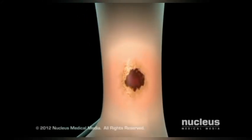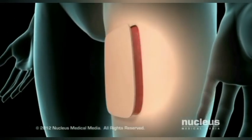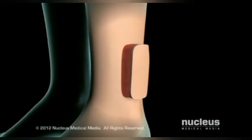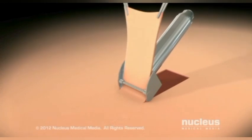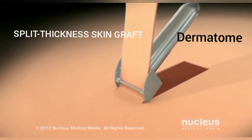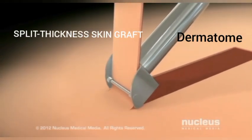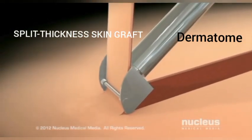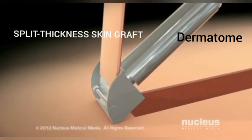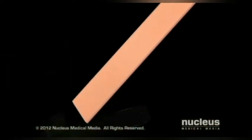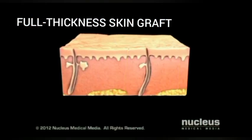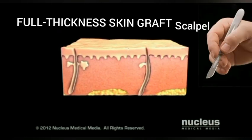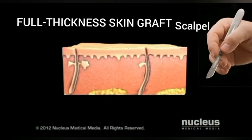Skin grafting is a procedure in which normal skin tissue is transferred to a site of damaged skin. For a split thickness skin graft, which requires epidermis with some part of dermis, a dermatome is used which cuts thin slices of skin. For a full thickness skin graft, which requires epidermis with the entire thickness of dermis, a scalpel is used.